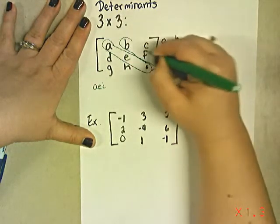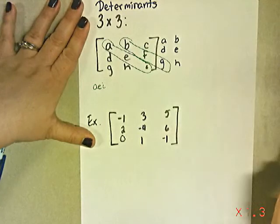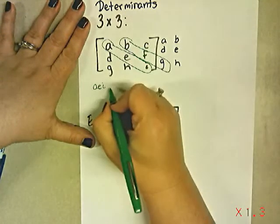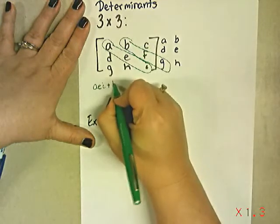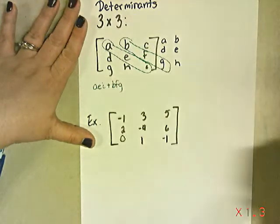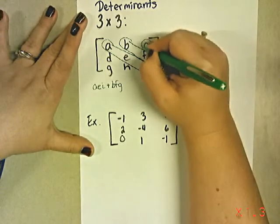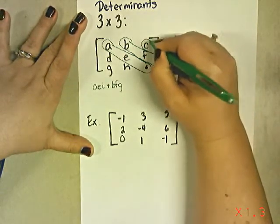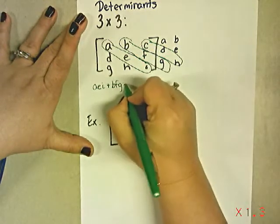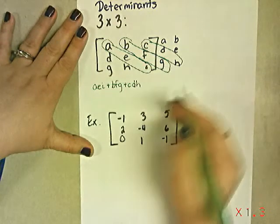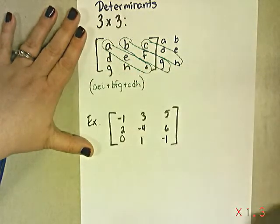So we're going to use the next diagonal, b, f, and g, and we're going to multiply those together. And we're going to add that on to the first one. So we've got b times f times g. And then last but not least, we do this last diagonal, c, d, and h, and we multiply those together. We're going to add all three of those diagonals together and put them in a big parenthesis.